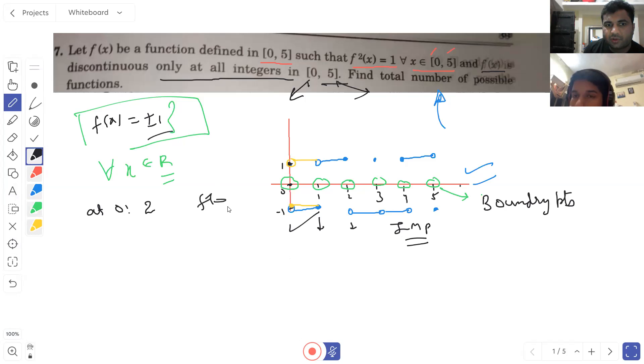Either you can make f(0) equal to 1 and if you start from minus 1, then you start from minus 1. Or f(0) equals minus 1, then if you start from plus 1, then you start from plus 1. You will have the option to show the discontinuity at zero.